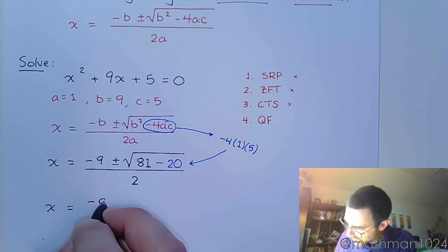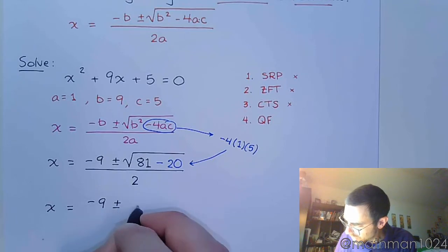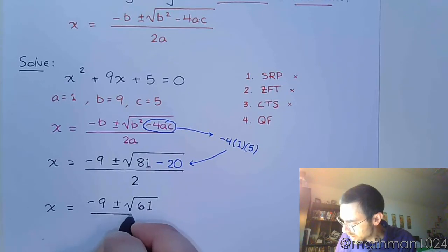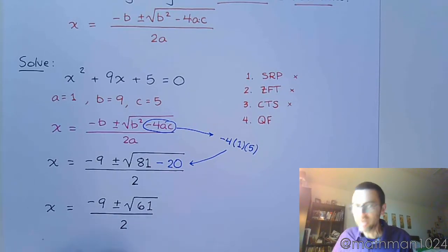And let's clean this up. So x equals negative 9 plus or minus the square root. 81 minus 20 is 61. And this is all divided by 2.